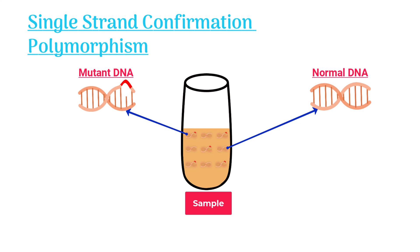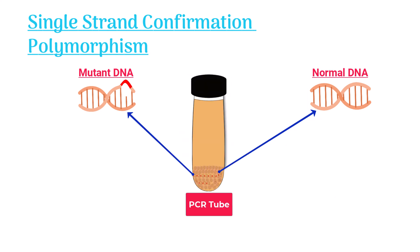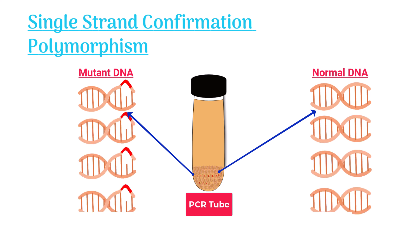We use a method called PCR to make copies of the DNA sample. PCR can amplify both normal and mutant DNA sequences present in the sample.